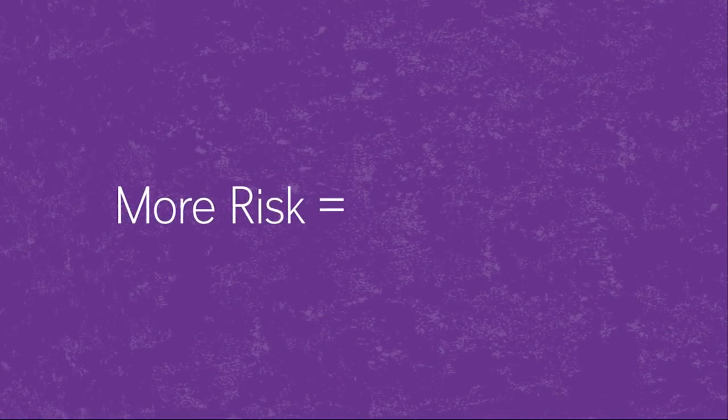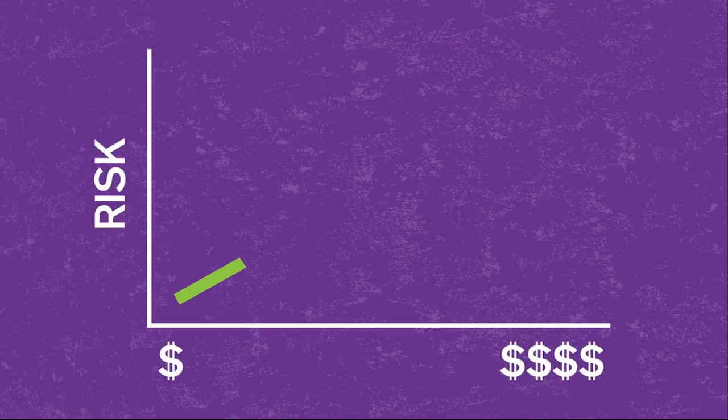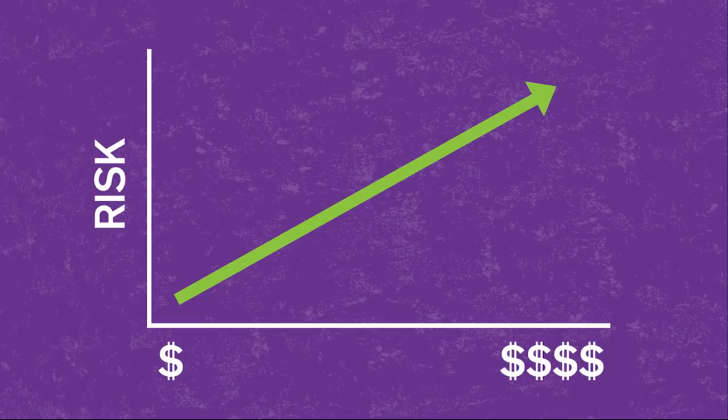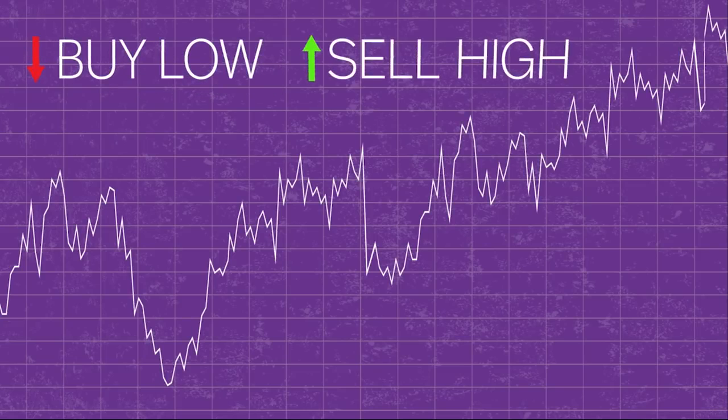So, how do you do it right? Most of us understand that if we take more risk, we expect more return. Let's look at the math. The line shows us that for any given level of risk, we can expect a certain rate of return. More risk, more return. The challenge, as you may be aware, is that markets don't move in a straight line. They go up and down. The goal is to buy low and sell high.